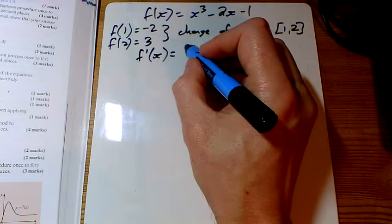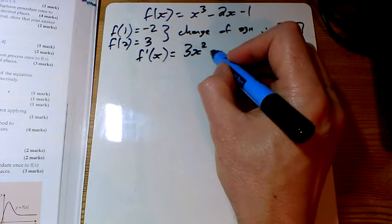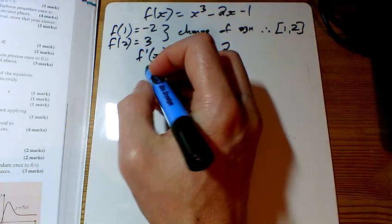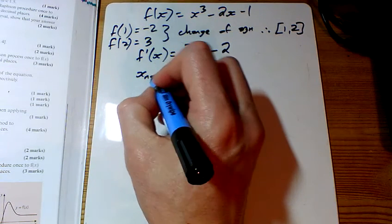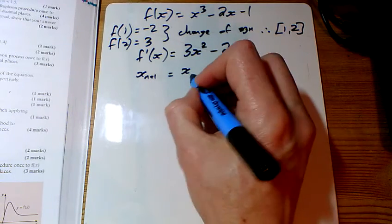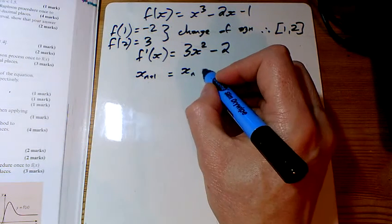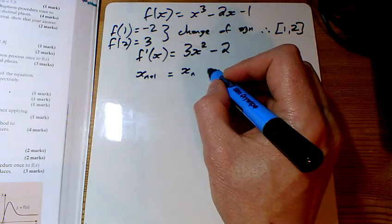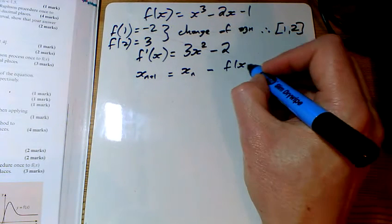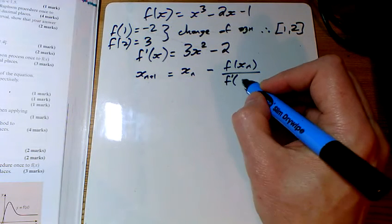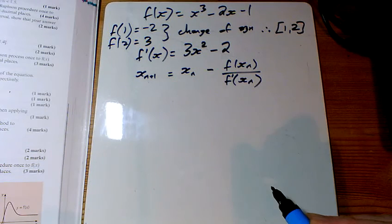This was the function here. Nice easy differentiation from the first year: just 3x squared take away 2. And what it means is that our iterative formula for finding the next solution each time is x the next one is where you are now take away f of the x value divided by f dashed of your x value.